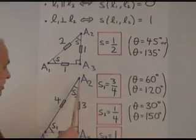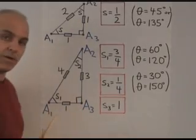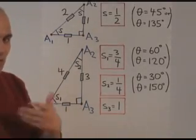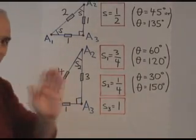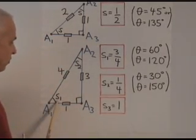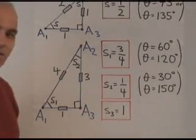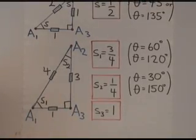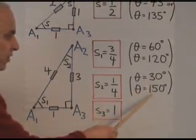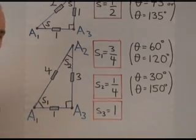Here's the 90-60-30 triangle. Its quadrances are 1, 3, and 4. Distances is 1, 2, and root 3. We avoid the root 3. 1, 3, and 4 is much simpler. The spreads, S1 here, is 3 quarters. That corresponds to an angle of 60 degrees or 120 degrees. This spread over here is 1 quarter. It corresponds to an angle of 30 degrees or 150 degrees. Of course, this spread here is 1.